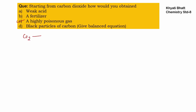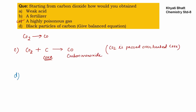From carbon dioxide, to obtain a highly poisonous gas: passing CO2 over heated coke (carbon) produces carbon monoxide, which is a poisonous gas. To obtain black carbon particles from CO2: burning magnesium ribbon in the presence of CO2 produces magnesium oxide (2MgO) and black carbon particles. The balanced equation: 2Mg + CO2 → 2MgO + C.